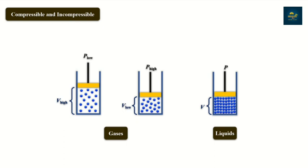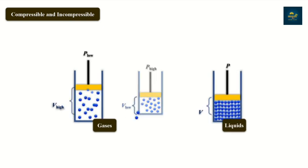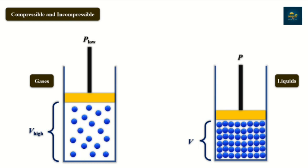In English, this is called intermolecular spaces. The intermolecular spaces in the liquid are very small. The gas molecule has larger intermolecular spaces, while the liquid molecule's intermolecular spaces are very small.